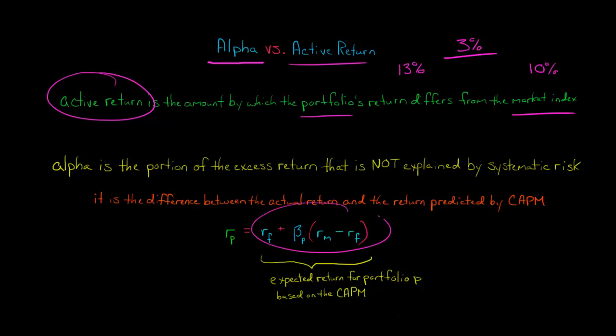So the capital asset pricing model, we've got the formula right here. That's going to tell us, based on the risk-free rate, the beta of the portfolio, and the market risk premium, when we put these together we can tell what is the expected rate of return for this portfolio.